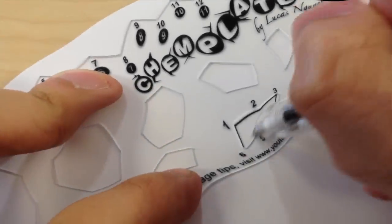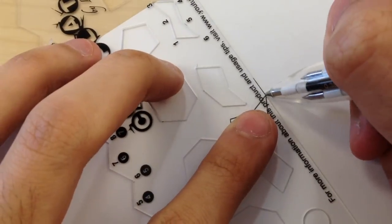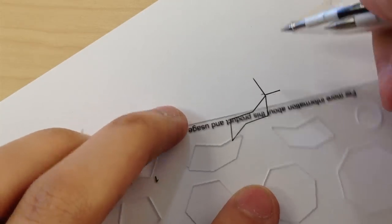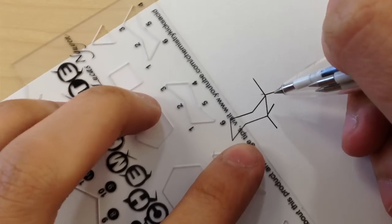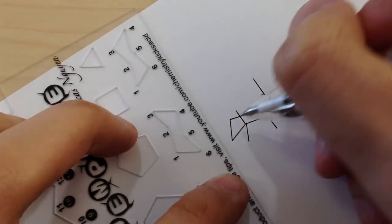But we are not stopping there. We've also added two chair conformations and two boat conformations, so you can flip your chairs in a matter of seconds. It will always be perfect, and you will never need to go back and erase.